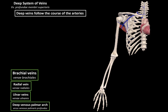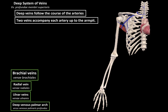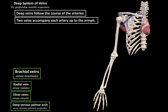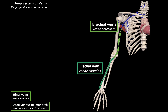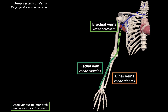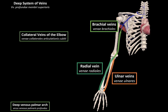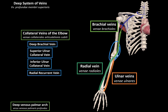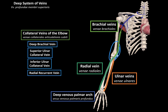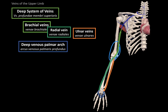The veins of the deep system follow the course of the arteries, with two veins accompanying each artery up until the armpit. First are the two brachial veins that go from the axillary vein to the cubital area. It then continues as two radial veins going towards the right side of the wrist. Then there are the ulnar veins. These veins form the collateral veins of the elbow through veins like the inferior ulnar collateral, the superior ulnar collateral, the deep brachial vein, and the radial recurrent veins. Then we have the deep venous palmar arch, which drains the fingers and the metacarpals and dumps the blood into the deep veins.